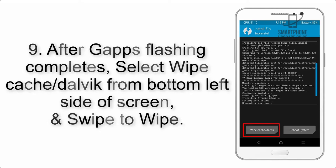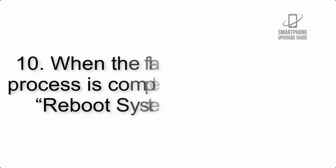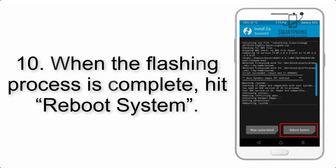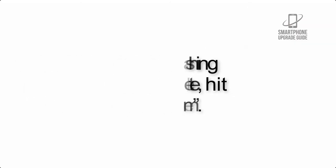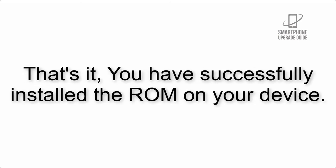Step 8: Flash the GApps zip package in the same manner. Step 9: After GApps flashing completes, select Wipe Cache and Dalvik from the bottom left side of the screen and swipe to wipe. Step 10: When the flashing process is complete, hit Reboot System. That's it — you have successfully installed the ROM on your device.